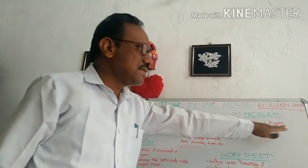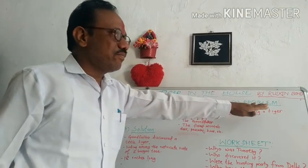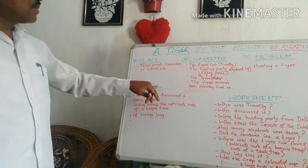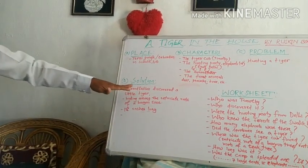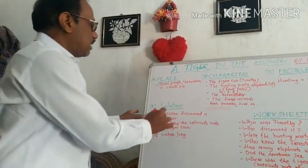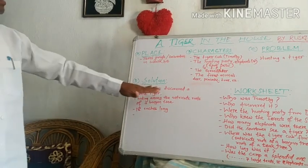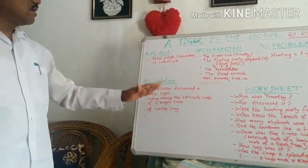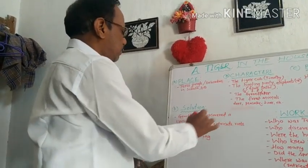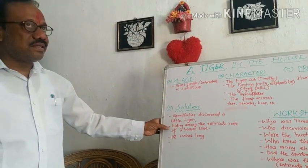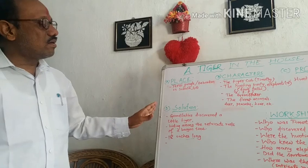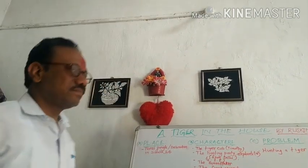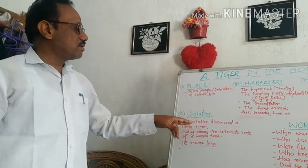Every problem has a solution. The problem was solved by grandfather. He was included with them because he knew the Sivalik Hills better than all those men from Delhi. While moving in the forest, they saw different animals — deer, peacocks, jackal, boar, etc. But their aim was to shoot a tiger. At last, it was discovered by grandfather.